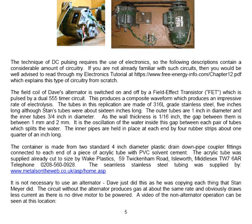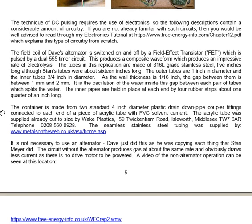The field coil of David's alternator is switched on and off by a field effect transistor, which is pulsed by a dual 555 timer circuit. This produces a composite waveform which produces an impressive rate of electrolysis. The tubes in this replication are made of 316L grade stainless steel. They're only 5 inches long, although Stan's tubes are 15 or 16 inches long. The outer tubes are 1 inch in diameter and the inner tubes are 3 quarters of an inch in diameter. As the wall thickness is 1/16th of an inch, the gap between the two tubes is between 1 and 2 millimeters.